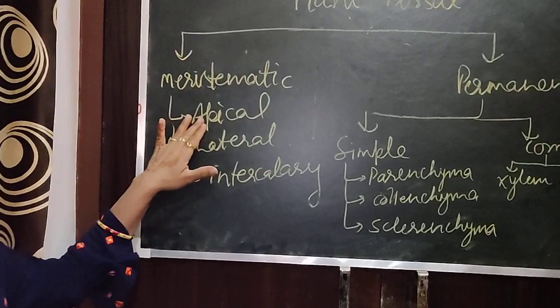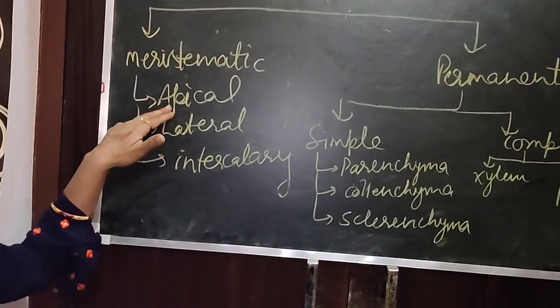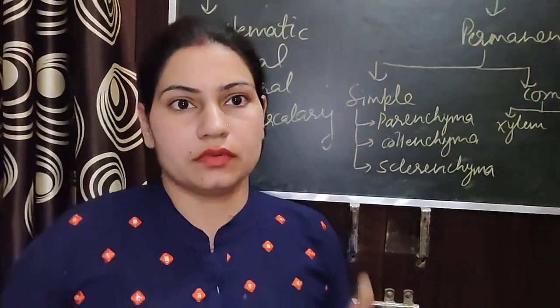They are of three types: apical meristem, lateral meristem, and intercalary meristem. Apical meristem is tissue that is present at the tip of roots and shoots, allowing the plant to increase in height.